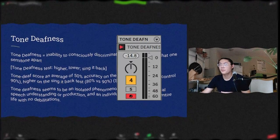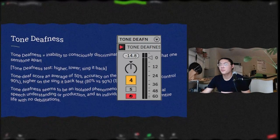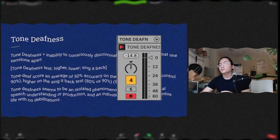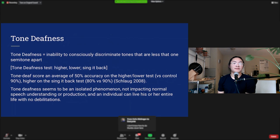It turns out that people with tone deafness score significantly higher on the sing it back test than the higher-lower test. Tone deaf people score an average of 50% on the higher-lower test, meaning that they guess it right by chance. And interestingly, people with tone deafness score an average of 80-90% on the sing it back test. So even though they can't tell whether a note is higher or lower than another note, they can more accurately sing those notes when they hear it. Tone deafness also seems to be an isolated phenomenon and doesn't impact normal speech or function. An individual can live his or her entire life with no debilitations, unless they're a musician.